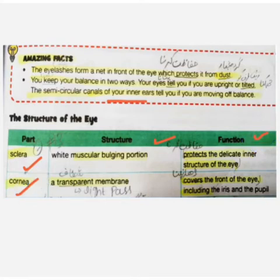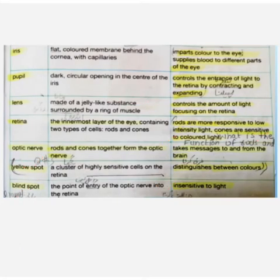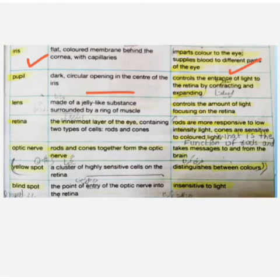The cornea is a transparent membrane — transparent means light passes through it, and we can cover our eyes in the front portion. The iris is a colored membrane. We can see which color — red, blue — it supplies blood to different parts. The eye pupil is a dark circular opening that controls the entrance of light to the retina by contracting or expanding.